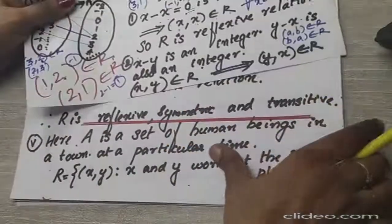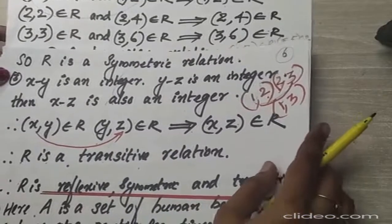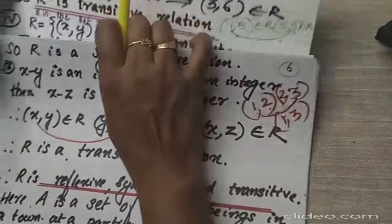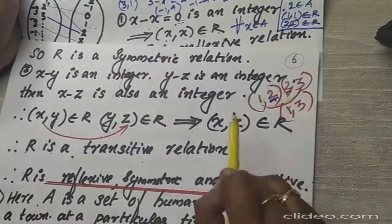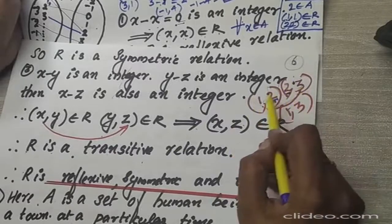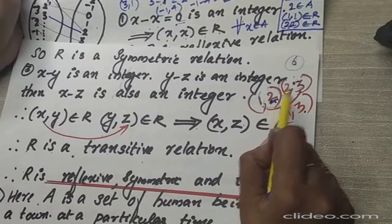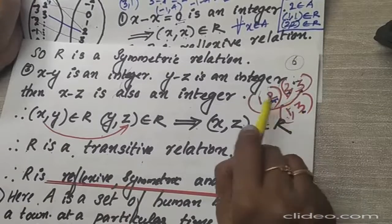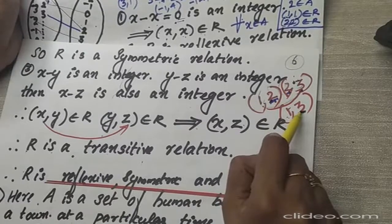The last one is transitive. The difference between integers is again an integer only, so it will be transitive. For example, take (1,2): 1 minus 2 = -1, an integer. Connecting with 2, take (2,3): 2 minus 3 = -1, an integer. Then (1,3): 1 minus 3 = -2, which is also an integer. So all these ordered pairs satisfy the transitive condition. Therefore, the given relation is transitive.